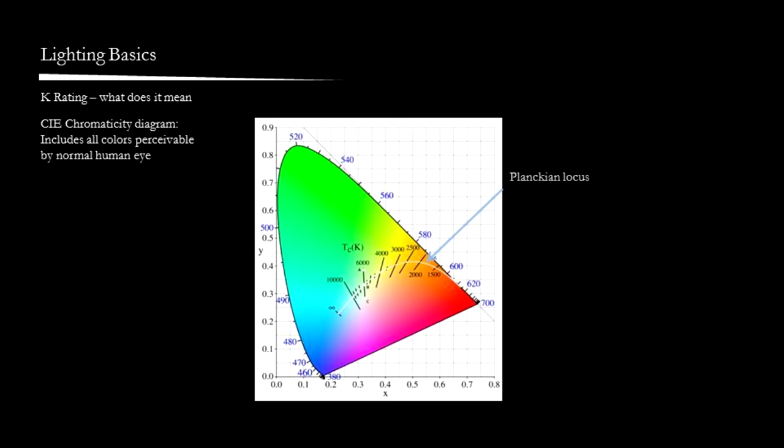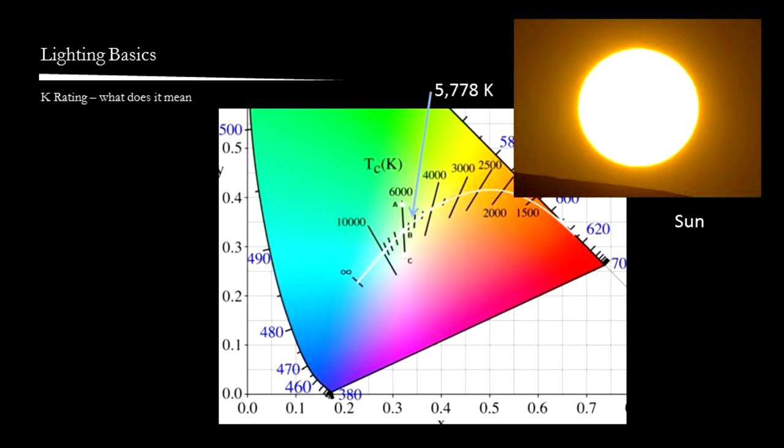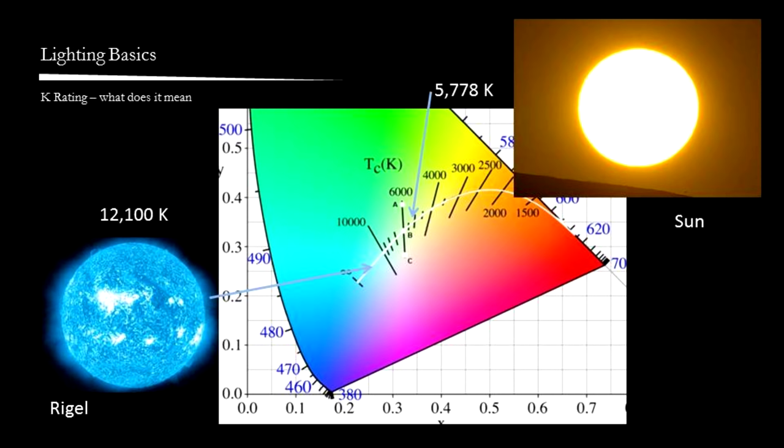It shows the color of an incandescent black body radiator at different temperatures. For example, stars are approximate black body radiators. Our sun at 5,700 Kelvin will have a whitish color when plotted on the Planckian locus scale. And this is the color of our daylight. The brightest star from the constellation Orion, for example, Rigel, has a surface temperature of 12,000K. While plotted on the Planckian locus, it looks blue with a Kelvin rating of 12,000. In short, this is what K rating is. It indicates a color hue on the Planckian locus. Nothing more, nothing less.